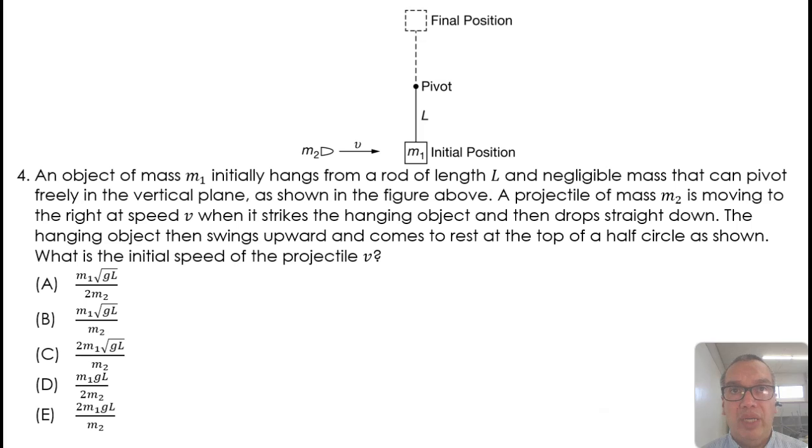An object of mass M1 initially hangs from a rod of length L and negligible mass that can pivot freely in the vertical plane as shown in the figure above. A projectile of mass M2 is moving to the right at speed v when it strikes the hanging object and then drops straight down. The hanging object then swings upward and comes to rest at the top of a half circle as shown.